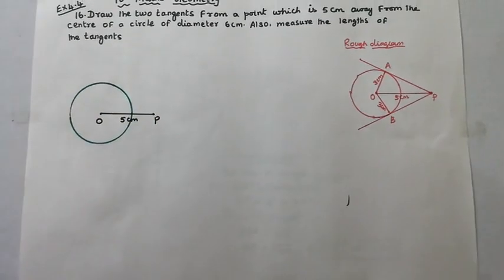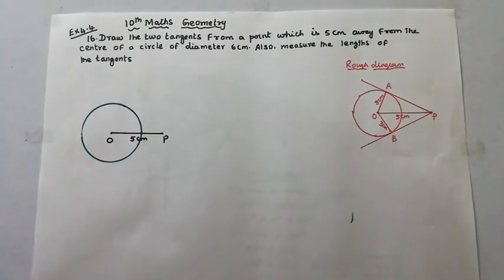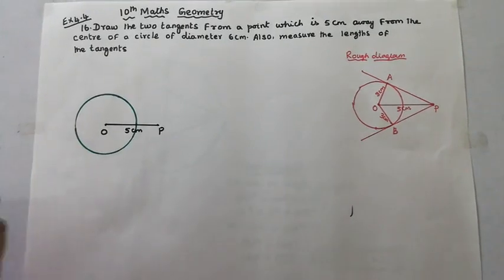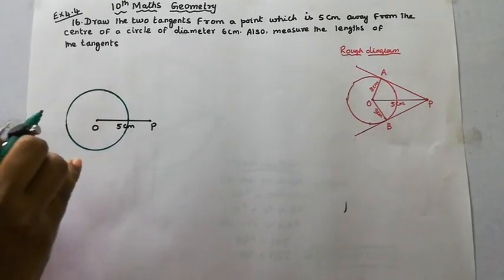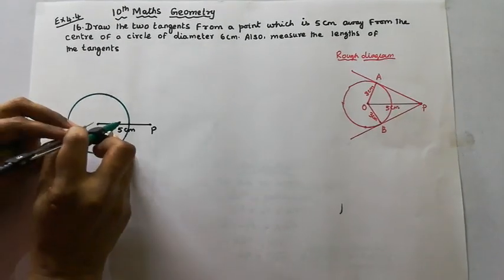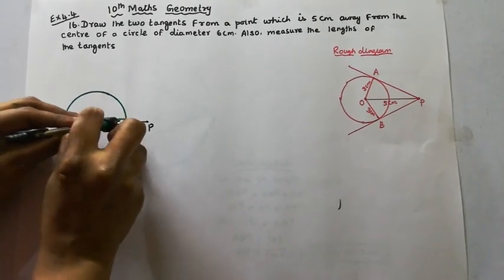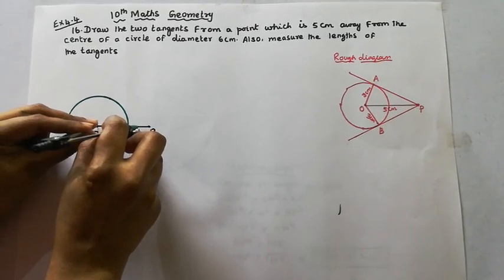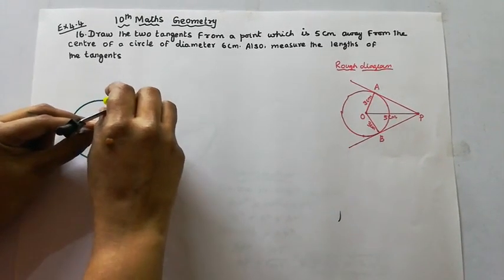Now we are going to draw the perpendicular bisector. We are going to bisect OP, so we take more than half — that is 2.5 — and draw arcs. More than half of 5 is about 3.5, so we use that measurement for the perpendicular bisector construction.